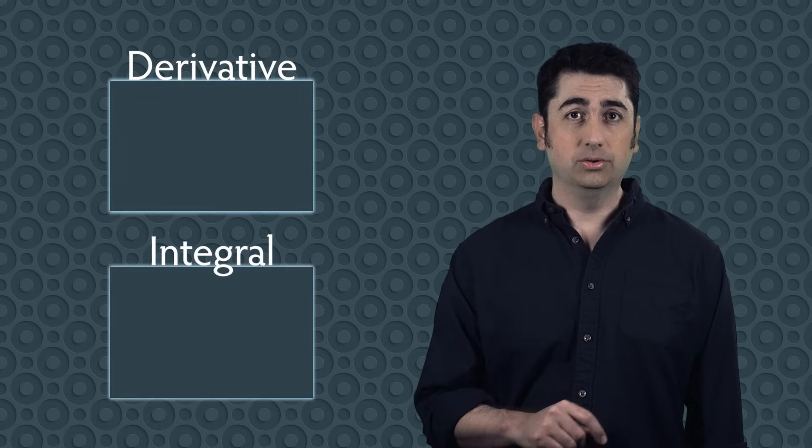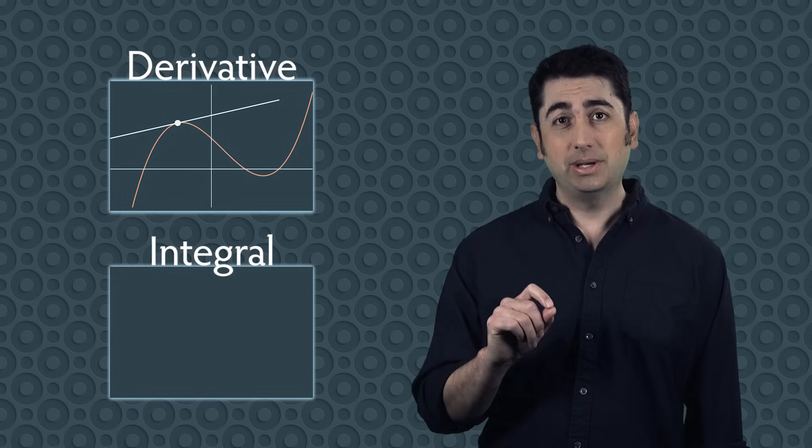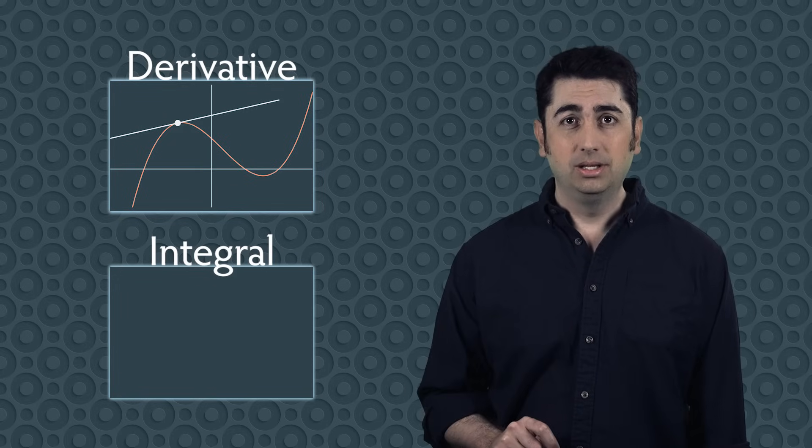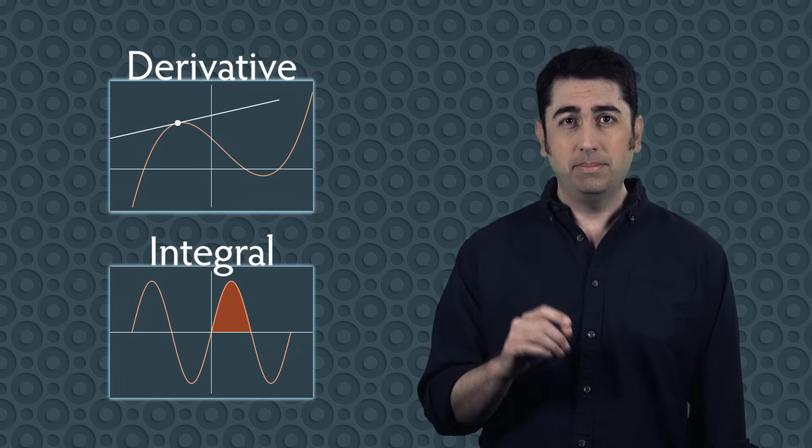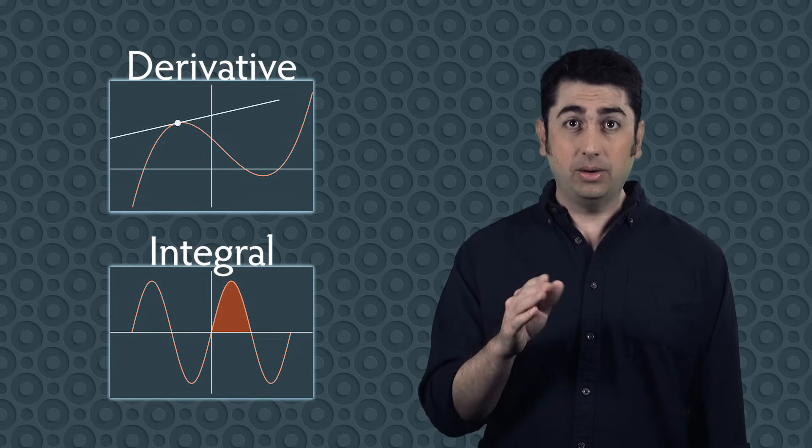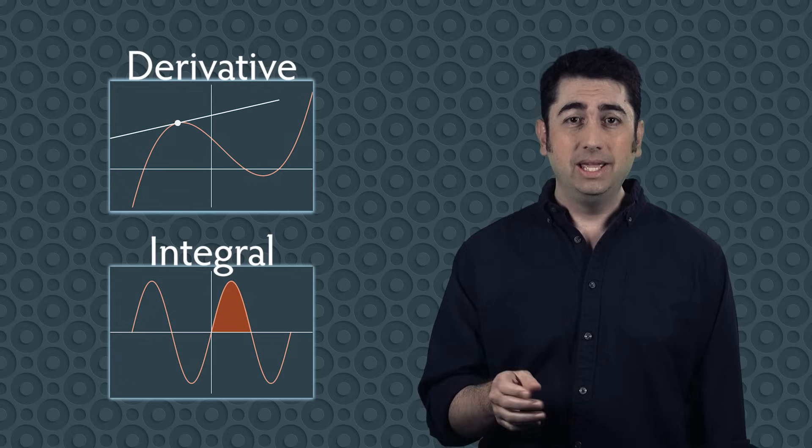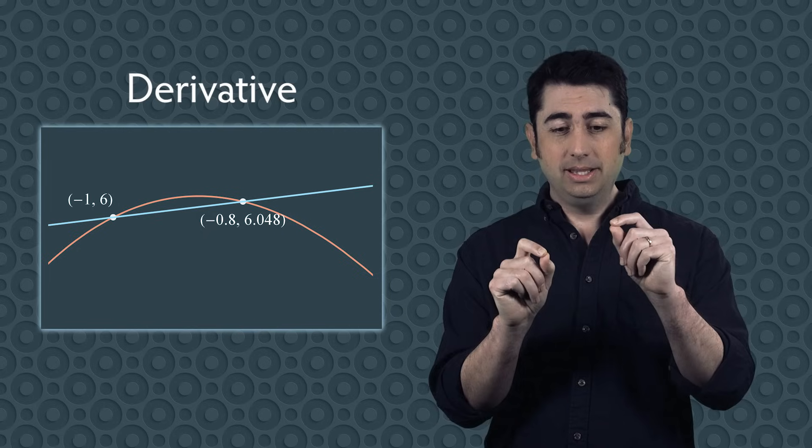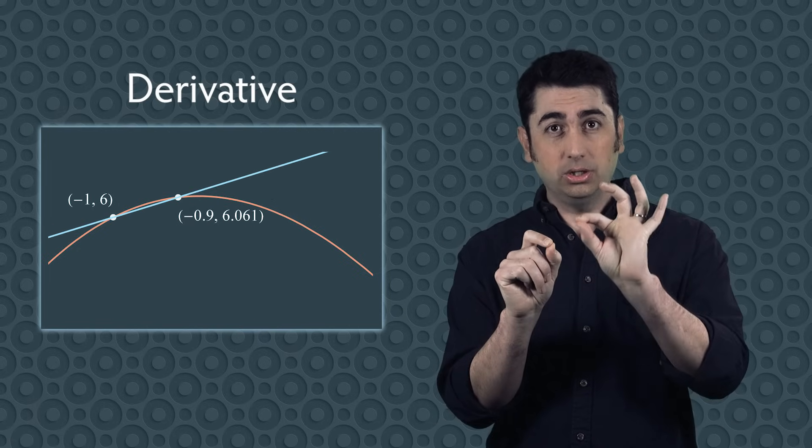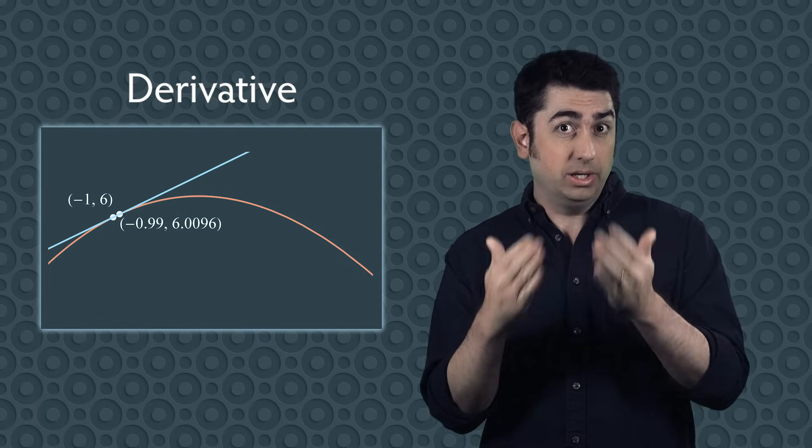So we have these two tools, the derivative and the integral. The derivative tells us about a function at a specific point, while the integral combines the values of the function over a range of numbers. But notice there is something similar to how we found the derivative and the integral. In the case of the derivative, we found two points that were close to each other. Then we let one point get closer and closer and closer to the point that we're interested in.